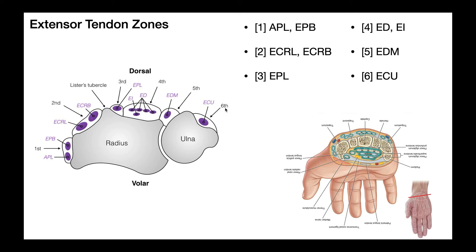The final zone is extensor zone number six. Proximal to the wrist, extensor carpi ulnaris is the only tendon there, and it's contained completely within a groove of the ulna. Looking more distally at this cross section, that's the tendon of extensor carpi ulnaris — it's pretty much dorsal and medial to the triquetrum.